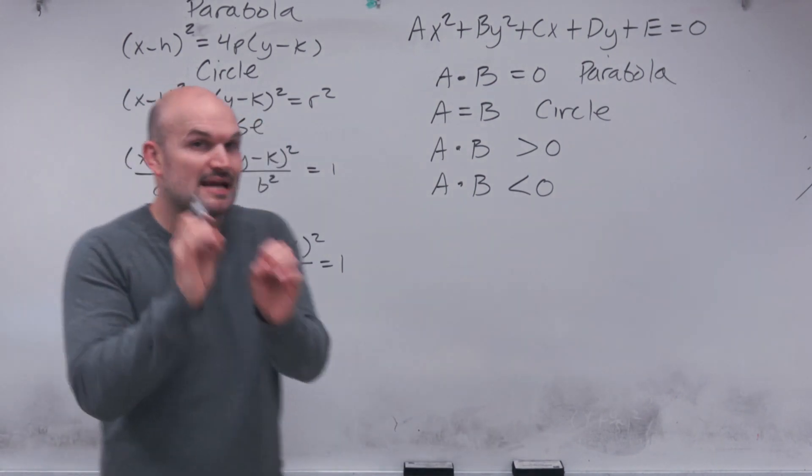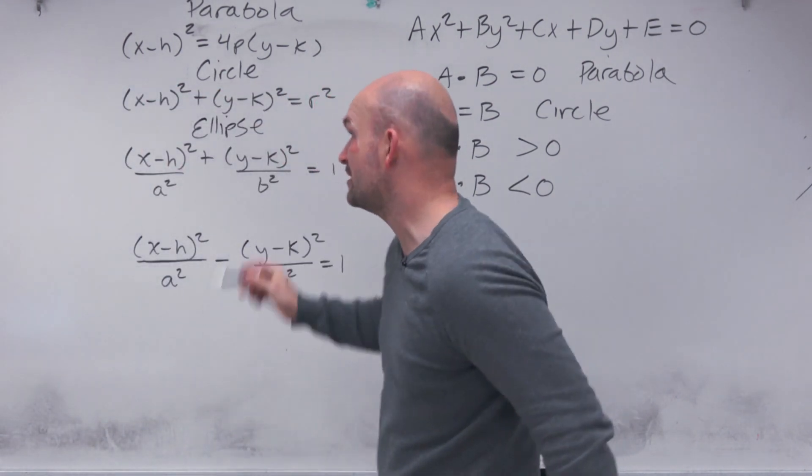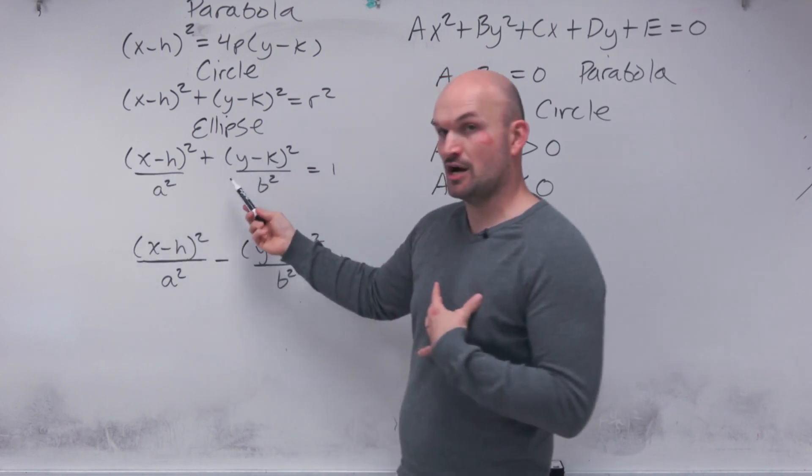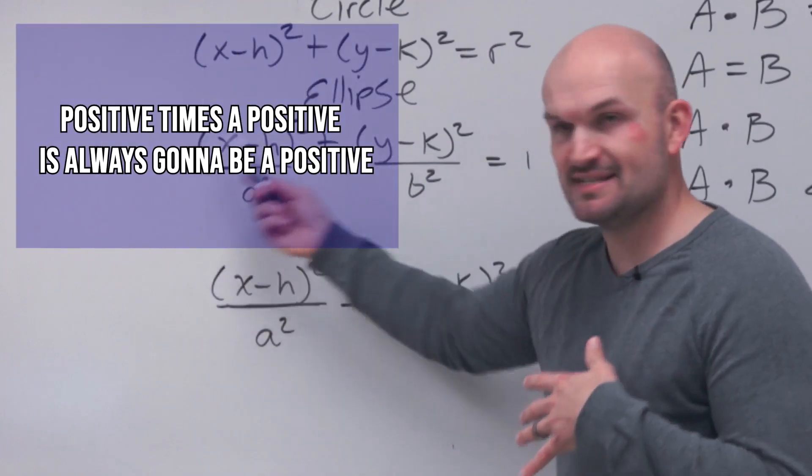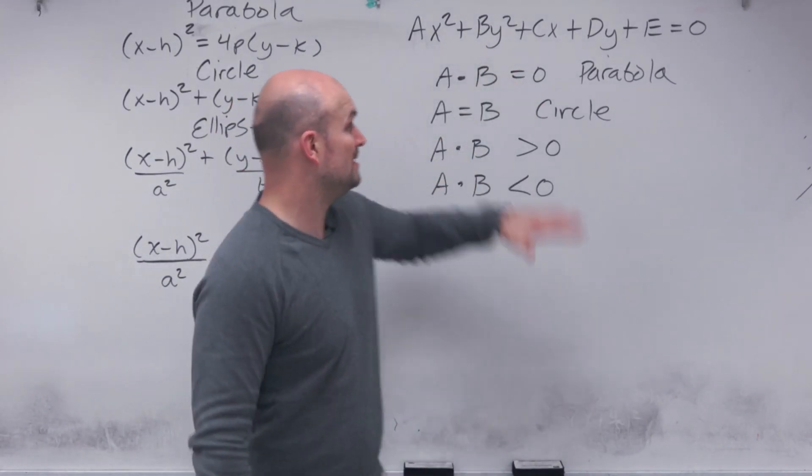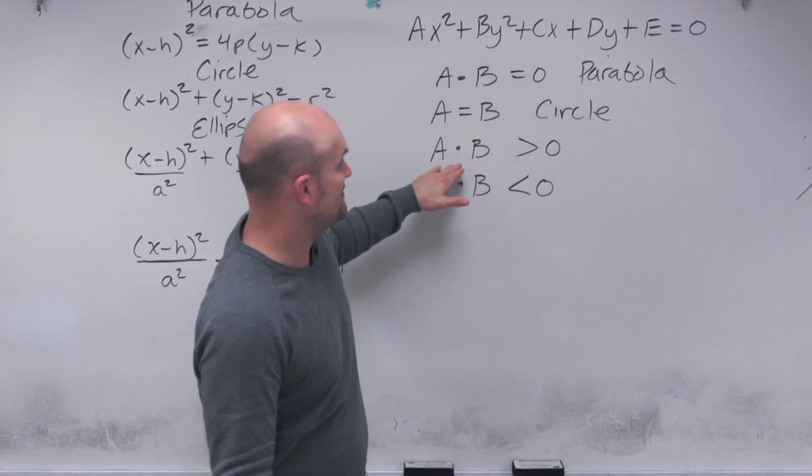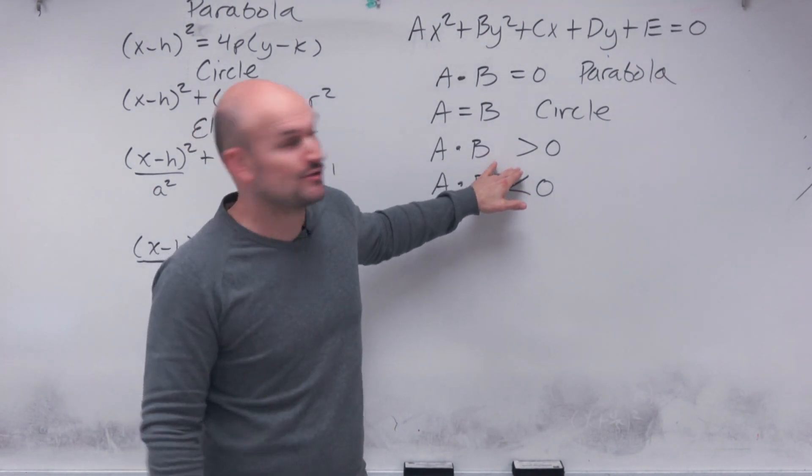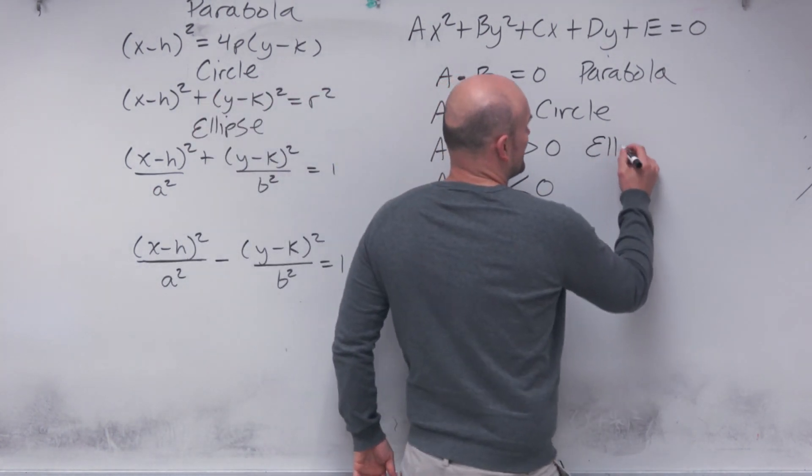The ellipse always is separated. Your binomial squares are all separated by addition. So no matter what my coefficients are, they're both going to be positive. So a positive times a positive is always going to give me a positive. So if I look at my equation in general form and I have my A times B, if I multiply them and that's going to give me a value that's greater than zero, then that's going to tell me I have an ellipse.